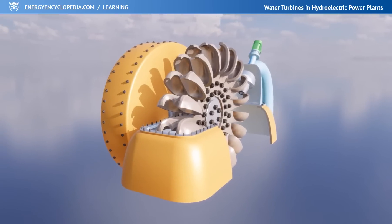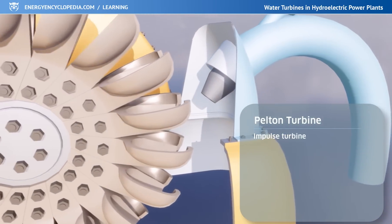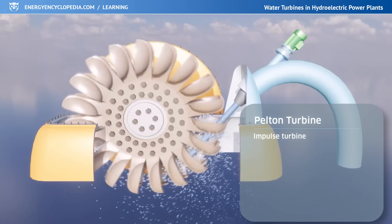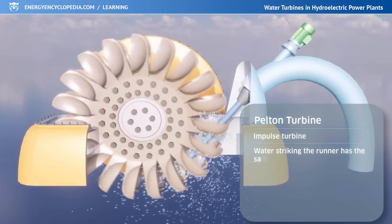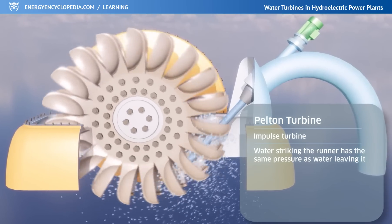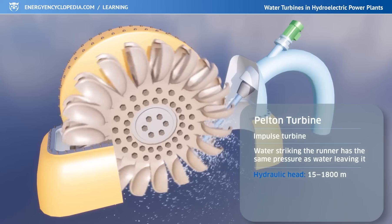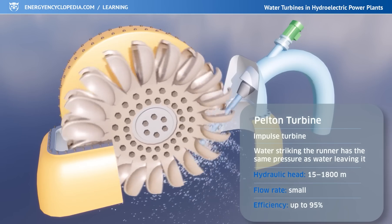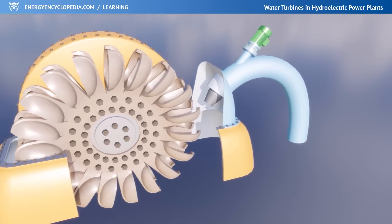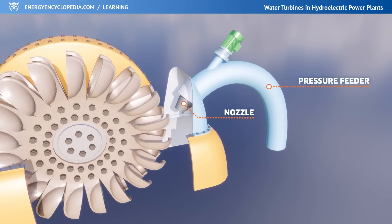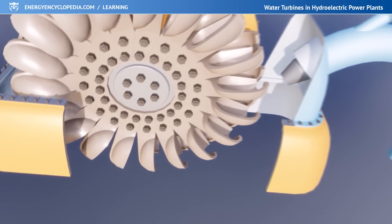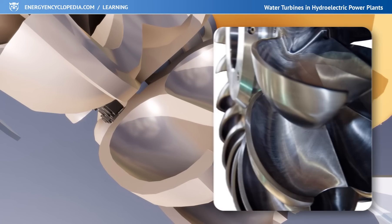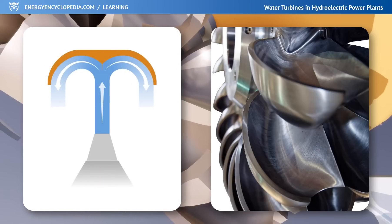The last water turbine being presented is the Pelton turbine. This is a constant pressure impulse turbine with partial tangential jets striking the runner. Constant pressure means that the water striking the blades of the runner has the same pressure as the water leaving it. Pelton turbines are used for very high head values of up to 1,800 meters and small flow rates, typically for mountainous areas. They can achieve up to 95% efficiency. The water is conducted to the turbine from the upper reservoir by a pressure feeder. In nozzles situated around the turbine, the pressure energy of the water is transformed into kinetic energy. The nozzles aim the water jet at blades shaped like double spoon-shaped buckets mounted on the outer rim of the runner. A blade situated between the buckets splits the jet into two, and the shape of the buckets makes the water do a U-turn and exit the bucket.